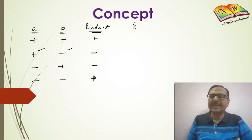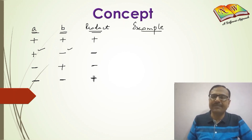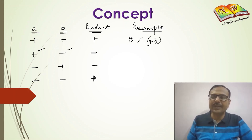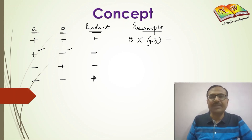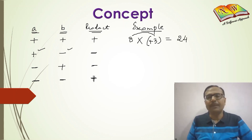Let's take an example. Suppose the first integer is plus 8 and the second integer is plus 3. When multiplying these two integers, you don't need to worry about the sign. Two positives produce a positive result, so 8 times 3 is 24, and that 24 will be positive.